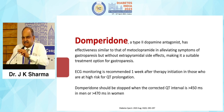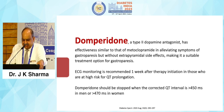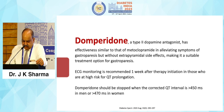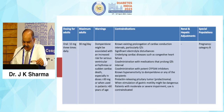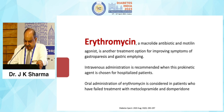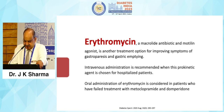Domperidone, a type 2 dopamine antagonist, has effectiveness similar to metoclopramide in relieving symptoms of gastroparesis but without extrapyramidal side effects, making it a suitable treatment option. ECG monitoring is recommended one week after therapy initiation in those at high risk of QT prolongation, as this drug causes QT prolongation. It should be stopped when the corrected QT interval is more than 450 milliseconds in men and more than 470 milliseconds in women. Erythromycin, a macrolide antibiotic and motilin agonist, is another treatment option for improving symptoms of gastroparesis and gastric emptying. Intravenous administration is recommended for hospitalized patients; oral is considered in patients who have failed treatment with metoclopramide and domperidone. The dose is 3 mg/kg IV administered over 45 minutes every 8 hours, with a maximum dose of 4 grams per day.